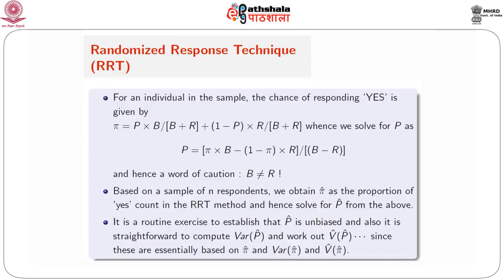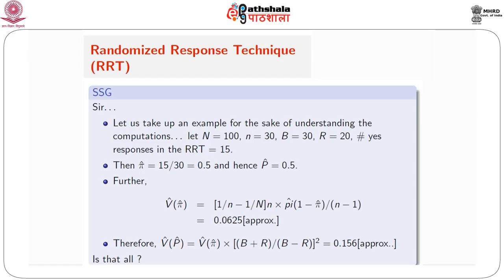Let us take up an example for the sake of understanding the computations. Let capital N = 100, small n = 30, B = 30, and R = 20. Number of yes responses in the RRT is 15. Then pi-hat = 15/30 = 0.5, and hence P-hat is also 0.5. Further, V-hat of pi-hat = (1/n − 1/N) × [n × pi-hat × (1 − pi-hat) / (n−1)] ≈ 0.0625. Therefore, V-hat of P-hat = V-hat of pi-hat × [(B+R) / (B−R)]² ≈ 0.156.